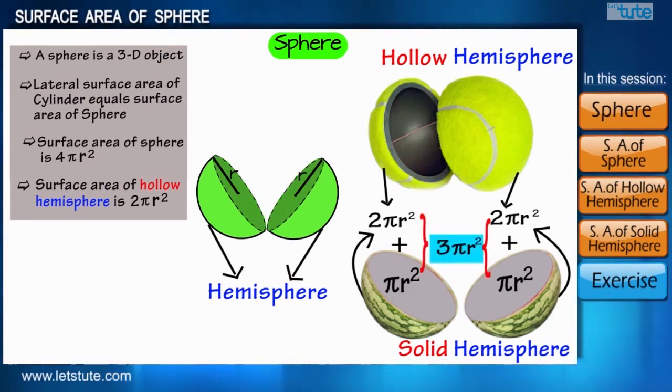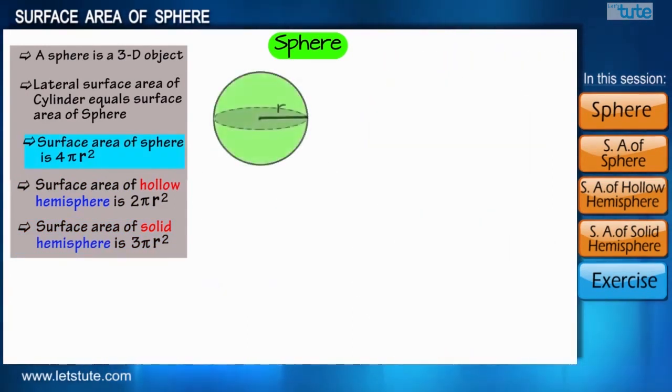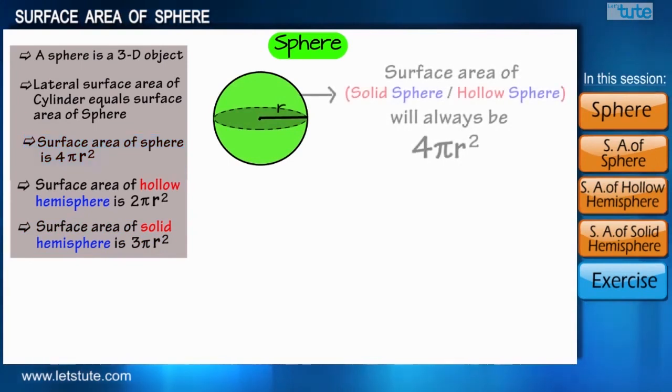In other words, we can say that surface area of a hollow hemisphere is 2πr², and surface area of a solid hemisphere is 3πr². But surface area of a sphere, whether it is hollow or solid, it will always be 4πr².